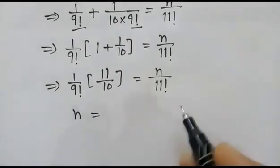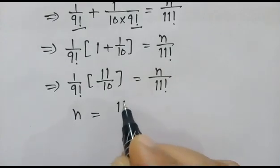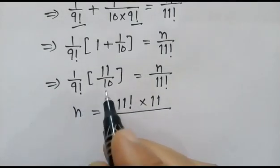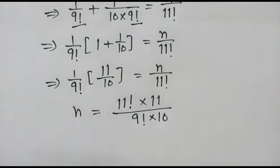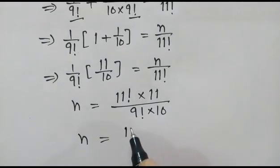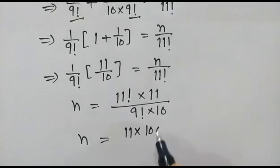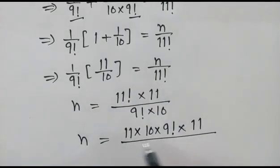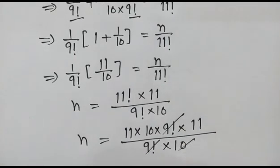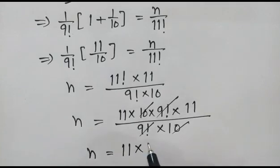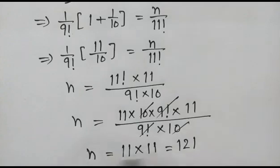So n is equal to factorial 11 times 11, over factorial 9 times 10. Now factorial 11 can be written as 11 into 10 into factorial 9. So factorial 9 cancels out and 10 cancels out, giving us n equal to 11 into 11, which equals 121.